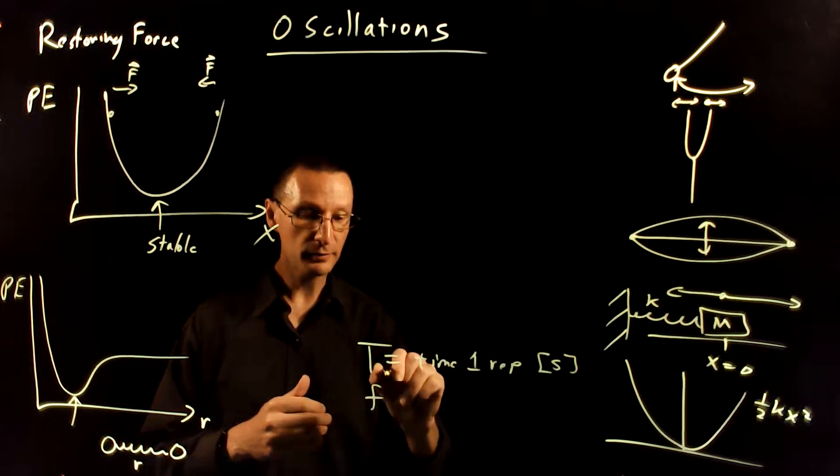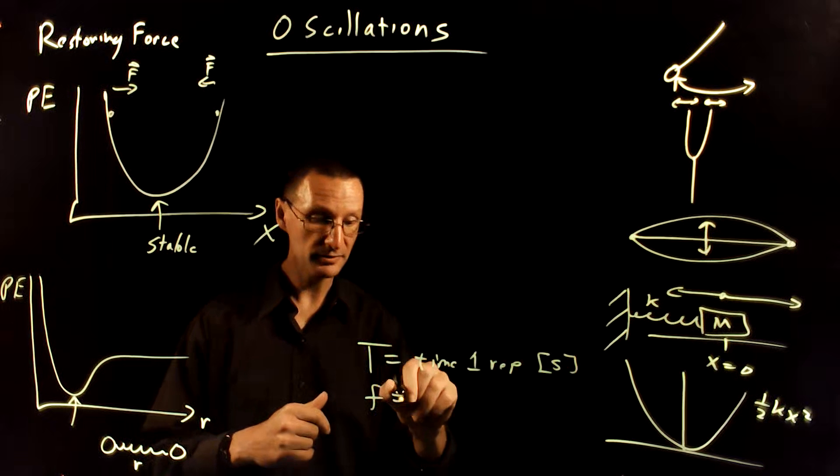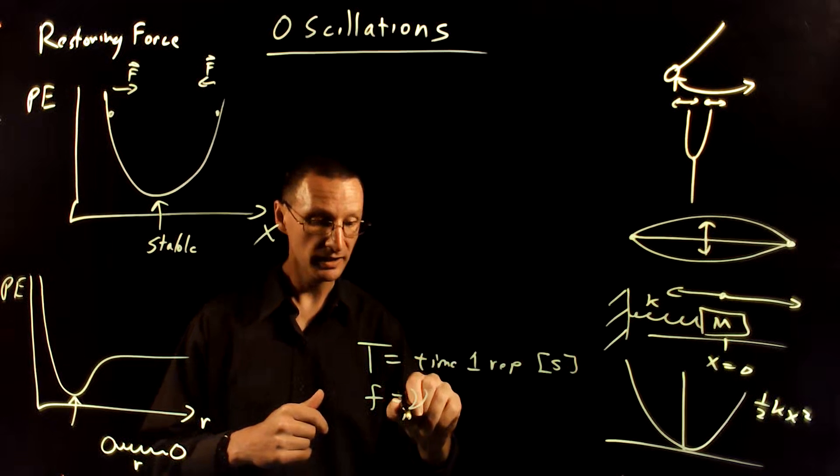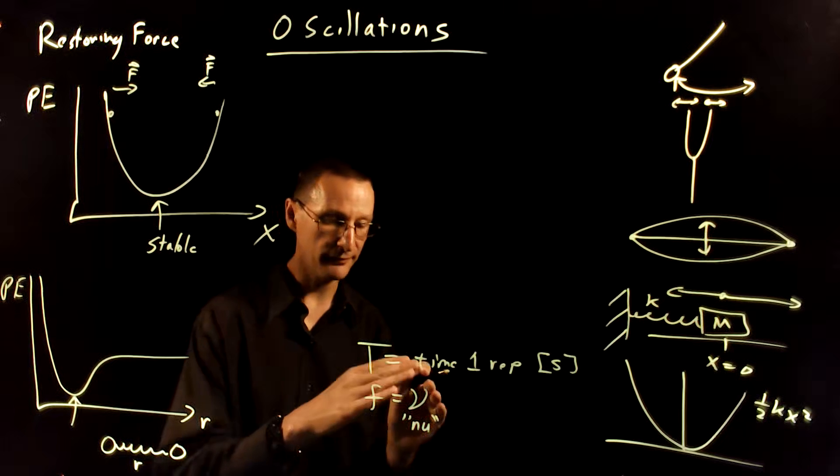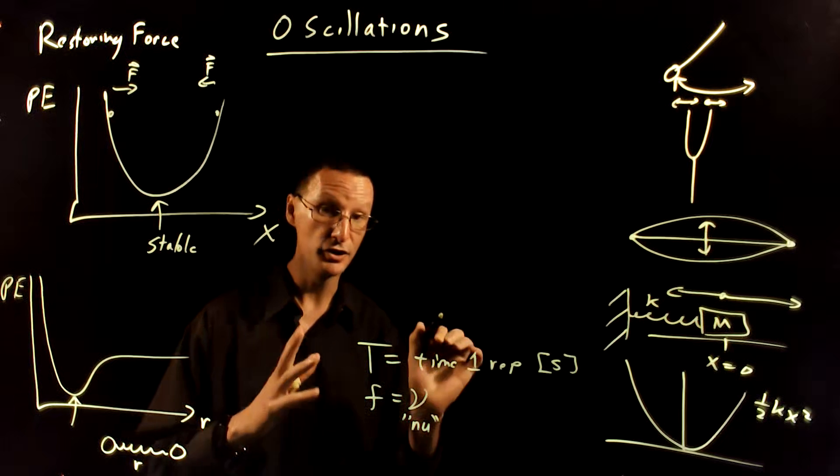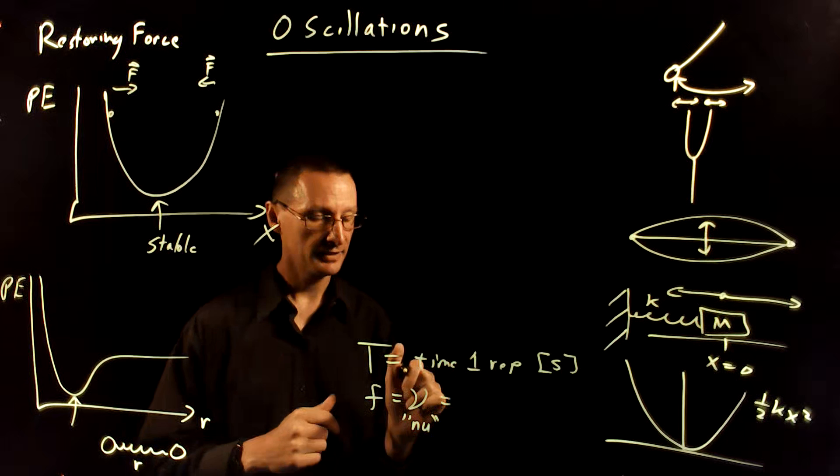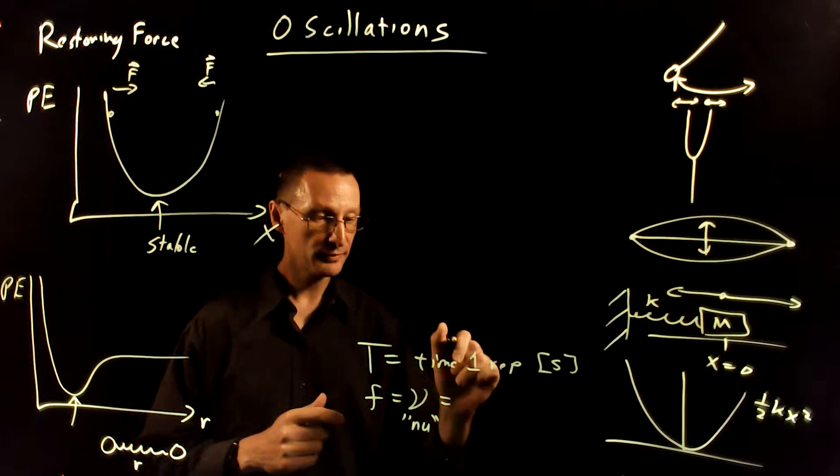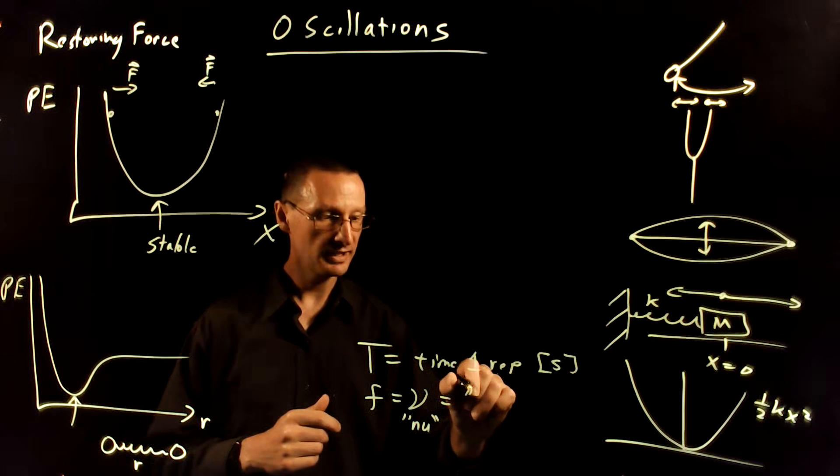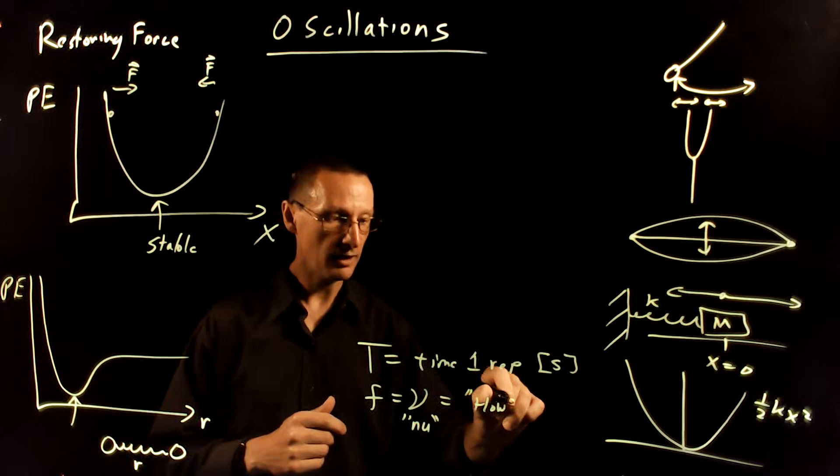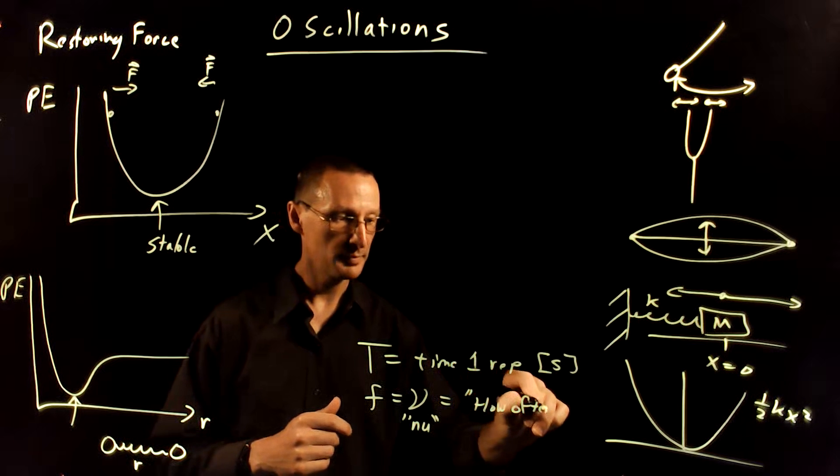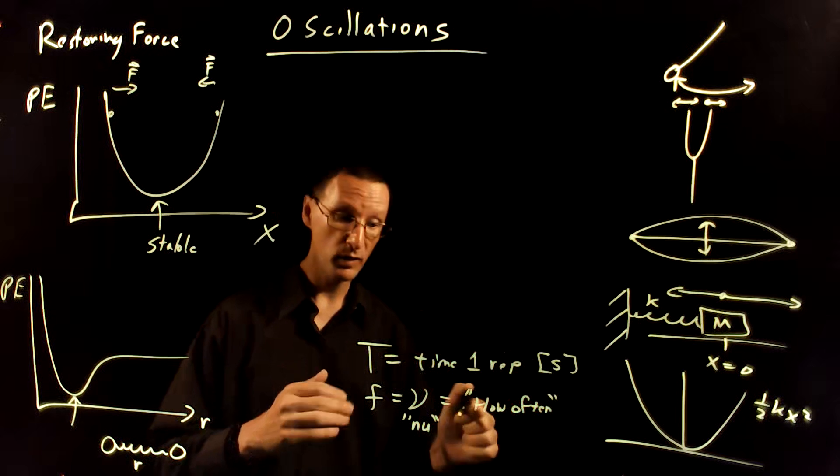There's also the frequency, which we use the letter F. Sometimes we use the Greek letter nu. This is like a sideways, it's like a falling over V, but it's not a V, it's nu, a Greek letter. And that one is frequency. And that's going to be, well, you can think of this as how often the thing repeats or how many times it will repeat in one second.